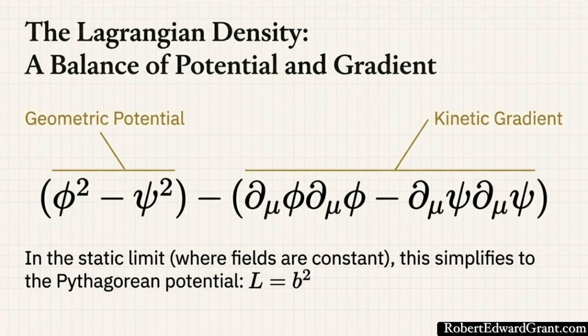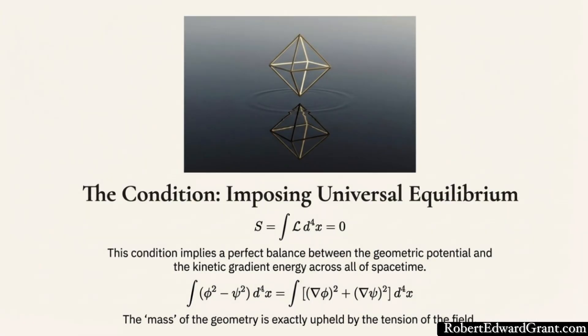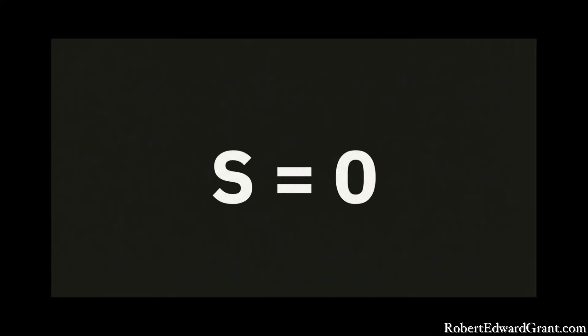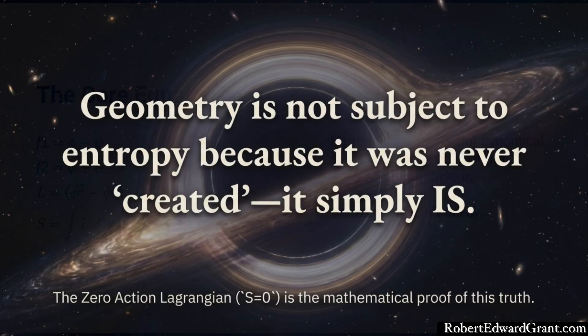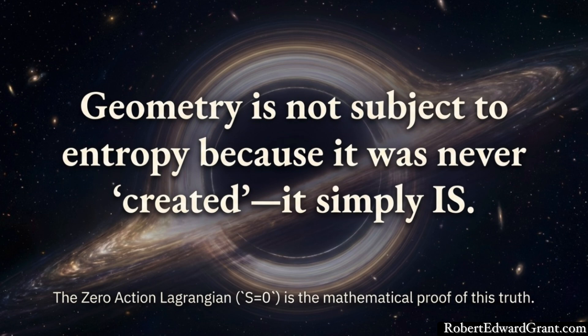This inherent stability leads to the final and most theoretical piece: the zero-action Lagrangian. In physics, the principle of least action means physical systems are always evolving, falling toward a state of minimum energy, minimum action. But in this geometric framework, they define a Lagrangian density based on these geometric factors. When you calculate the total action for the entire system, it is identically zero, at all points. It's not seeking zero, it's already there. These geometric structures, the ones encoded by grant polytopes, exist in a state of perfect intrinsic equilibrium. They aren't evolving toward minimum action, they're already at zero action. It takes no energy to maintain their topology.